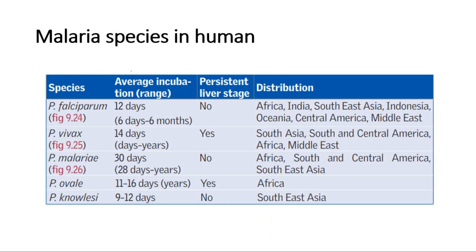These are the 5 malaria species that cause disease in humans: Plasmodium falciparum, vivax, malariae, ovale, and knowlesi. Each of the species has a different incubation period.